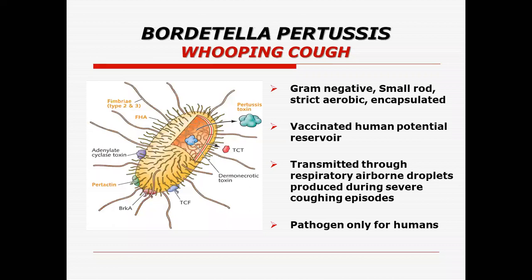If you look at the organism and the diagram, the organism is of course a gram-negative microorganism. The cell wall has the characteristics found in a gram-negative cell. It is a small coccobacillus organism. All four of these genera are mostly coccobacilli. It is strictly aerobic and an encapsulated microorganism.